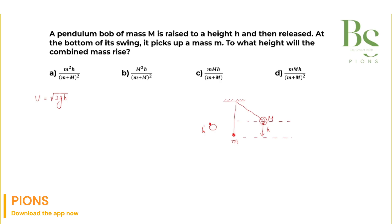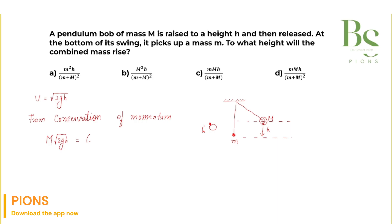From conservation of momentum, momentum before collision equals momentum after collision. Just before the collision, the velocity of capital M is √(2gh) and the velocity of small m is zero. So: M × √(2gh) + m × 0 equals the momentum after collision.